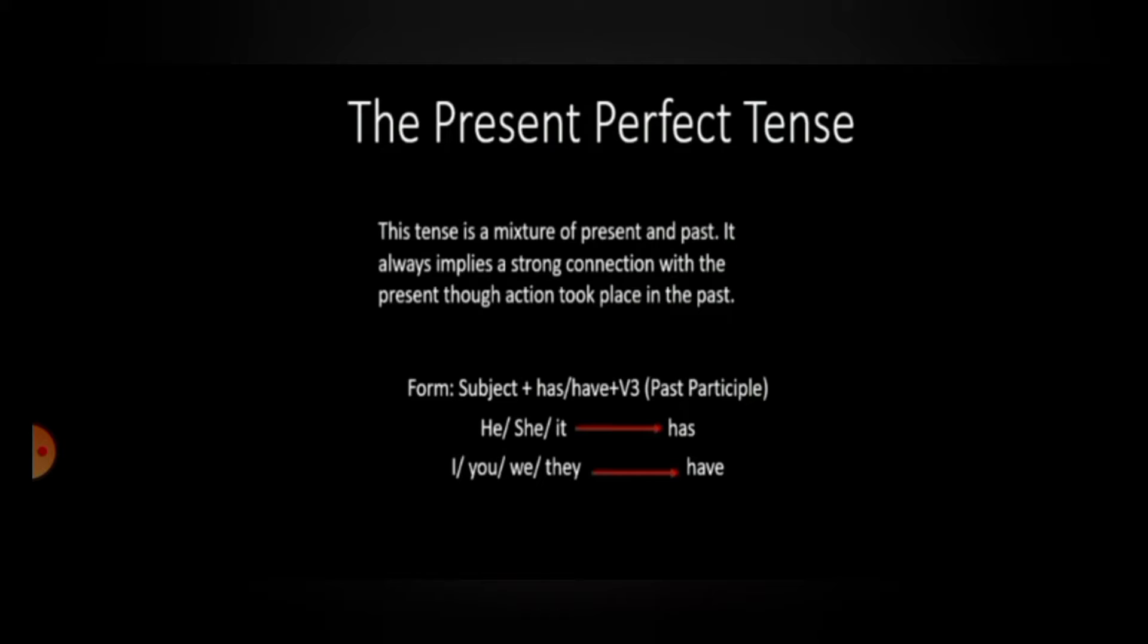Now children, present perfect tense is the first of the advanced tenses. It is advanced not only in terms of grammar but also in the way we think about tenses. The present perfect connects the past and the present because the result of the past action was felt in the present. In other words, this tense is a mixture of present and past. It always implies a strong connection with the present though action took place in the past.